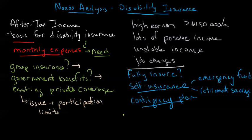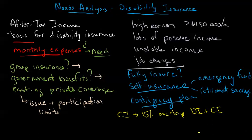One thing to note is around critical illness insurance, which we talked about in the previous video in this series. There's about a 15% overlap between DI and CI claims — that is, people who have both policies — and generally about 15% of claims can actually be claimed on both policies. So if you have critical illness insurance in place, that might be something that helps bring you closer to being fully insured, rather than having to rely solely on self-insurance.